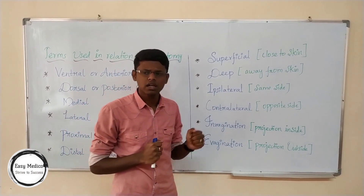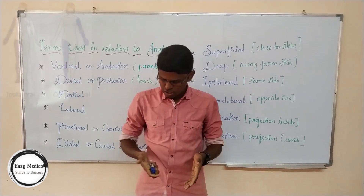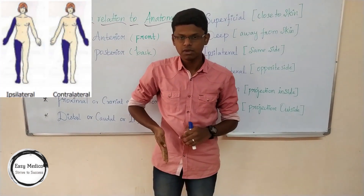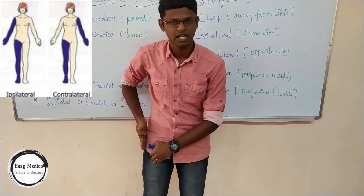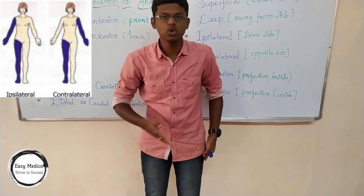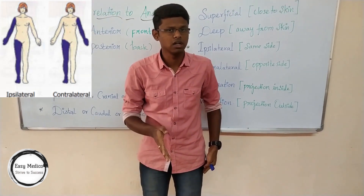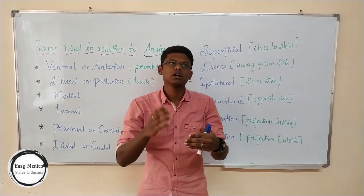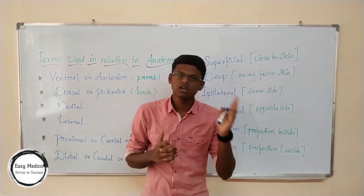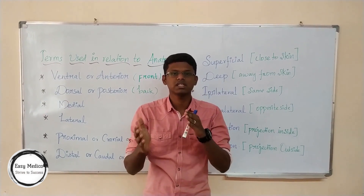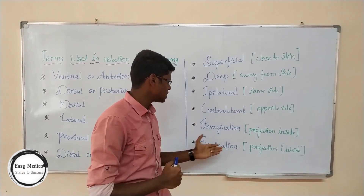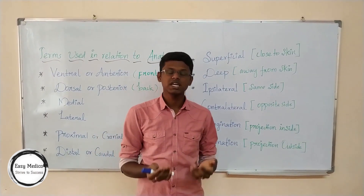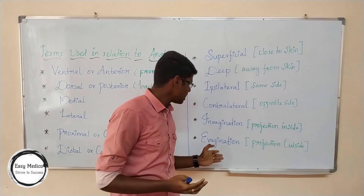What is ipsilateral and contralateral? Imagine your right thumb — it is on the same side as your right leg, which is known as ipsilateral. Your left thumb, which is opposite to your right leg, is known as contralateral. You can remember contralateral like 'controversy' — a situation where people are opposite to each other. What is invagination and evagination? Invagination is a projection inside which forms a cavity, and evagination is a projection outside. Thanks for watching.